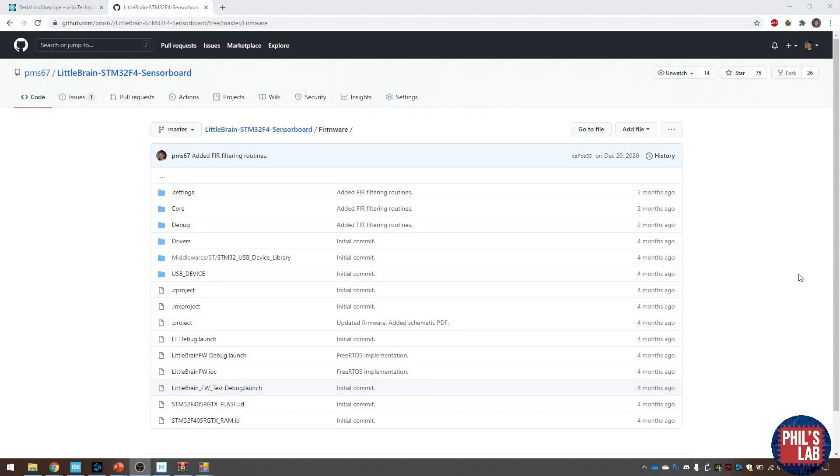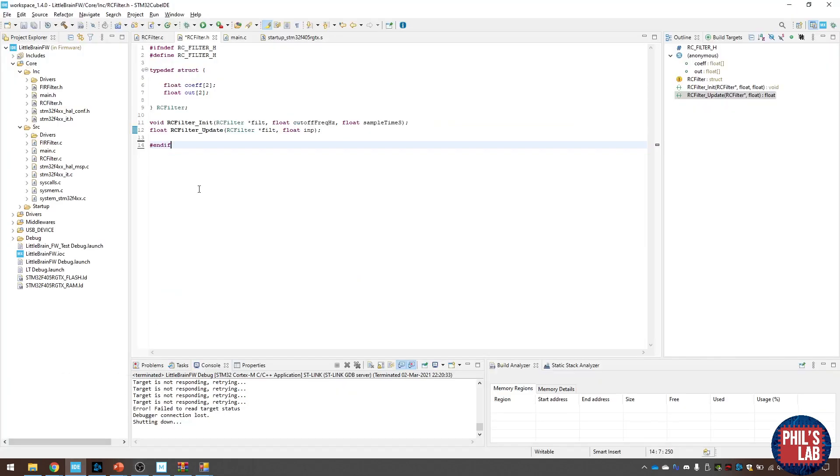So in a previous few videos talking about STM32 firmware, FIR filter design, and so on, we've expanded on this little brain firmware and you can find the current version in the GitHub repository. And feel free to have a browse through the code. We're going to add a bit to it today. So let's move over to the STM32 cube IDE.